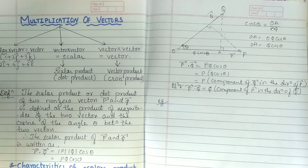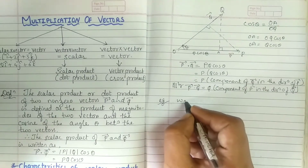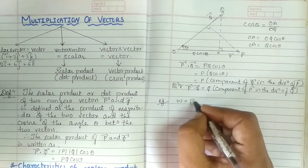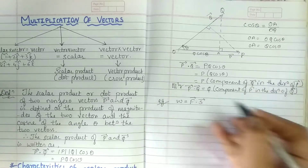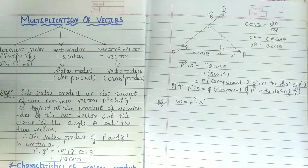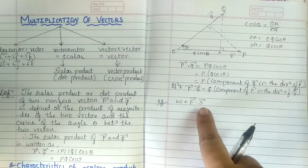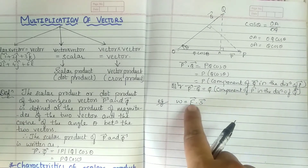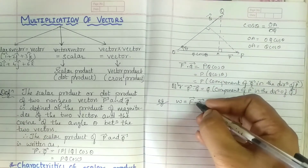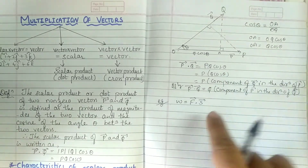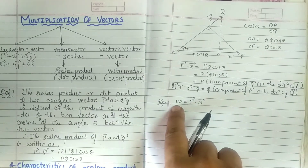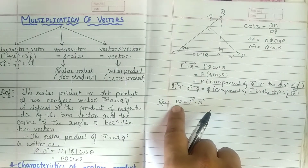As we know, work is force into displacement. Force has a direction and displacement has a direction — these are vectors. The product of these vectors using the dot product, which is a scalar product, gives the answer in terms of a scalar. Work is a scalar quantity.